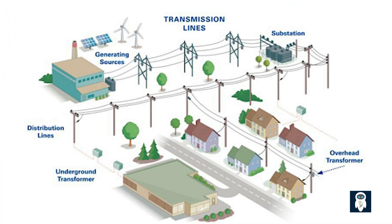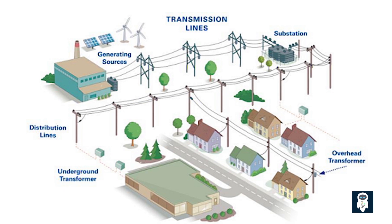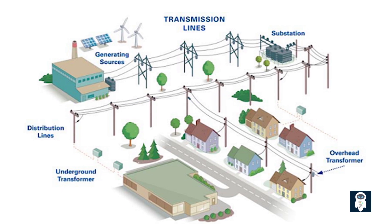To recap, the reason for having two power lines on each pole for high-voltage transmission lines is redundancy and increased capacity. It ensures uninterrupted power supply and meets the growing energy demands. On the other hand, low-voltage distribution lines have a single line on each pole for safety reasons and cost-effectiveness. This simpler setup allows for easier maintenance, reduces hazards, and keeps the distribution infrastructure affordable.